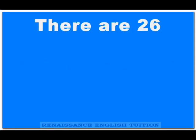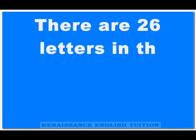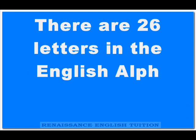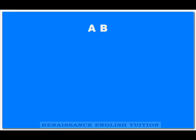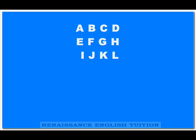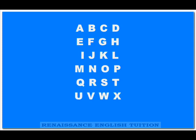There are 26 letters in the English alphabet: A, B, C, D, E, F, G, H, I, J, K, L, M, N, O, P, Q, R, S, T, U, V, W, X, Y, Z.